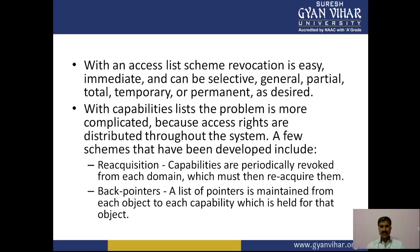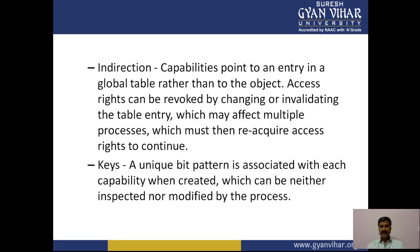The schemes include: reacquisition — capabilities are periodically revoked from each domain, which must then reacquire them; back pointers — a list of pointers is maintained from each object to each capability held for that object; and indirection — capabilities point to an array entry in a global table rather than directly to the object, so access rights can be revoked by changing or invalidating the table entry, which may affect multiple processes.